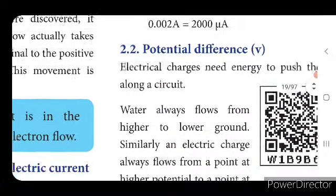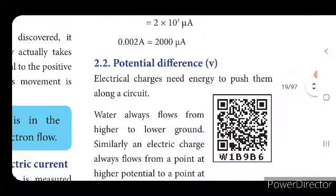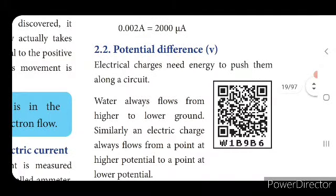Now we will see what is potential difference. Electric charges need energy to push them along a circuit. Suppose you take water in a pipe — if you open the tap, water will be flowing; if you close the tap, water will not come. You are applying some pressure to that water — then only it flows. Like that, some pressure is needed for the flow of electric charge, for the flow of electric current.